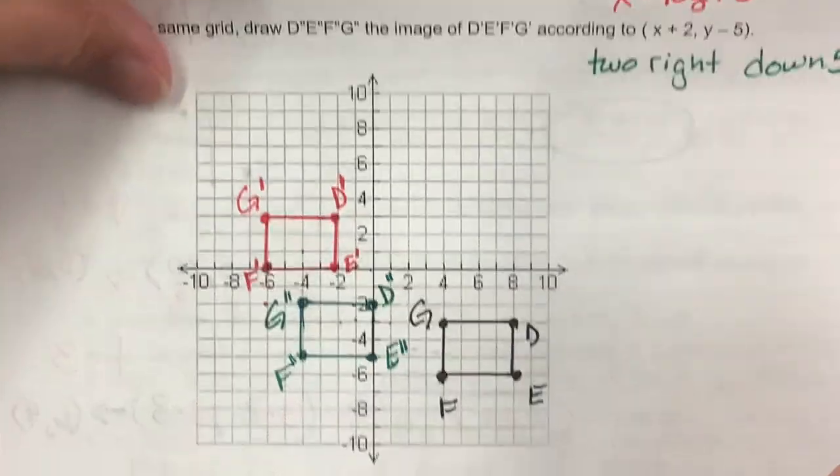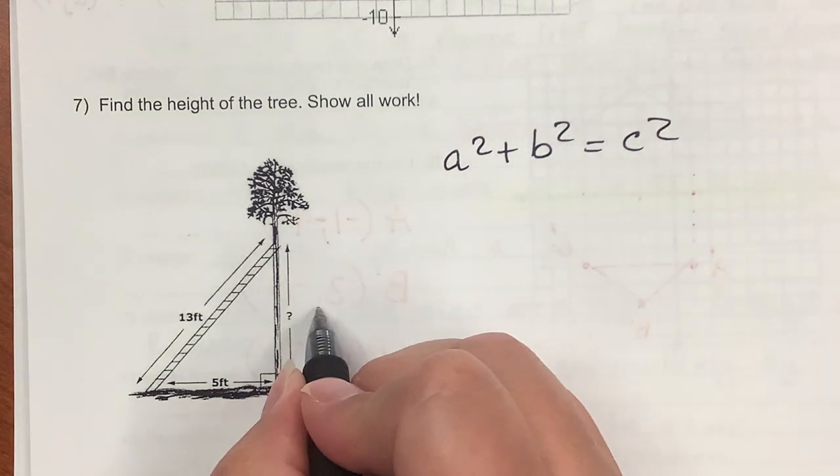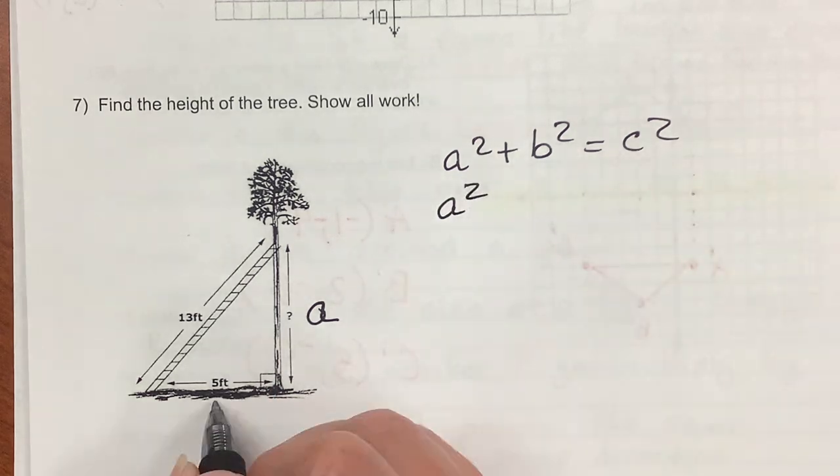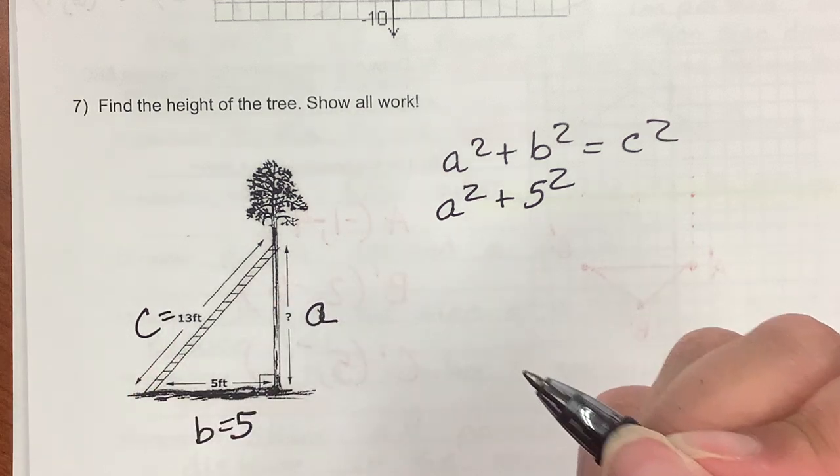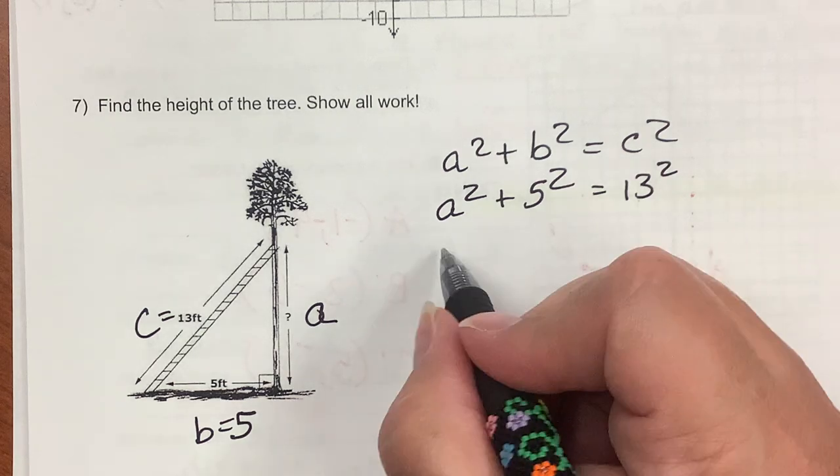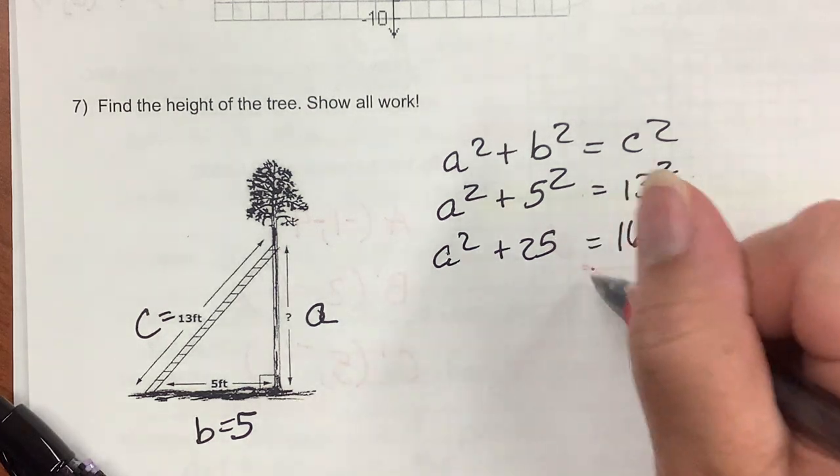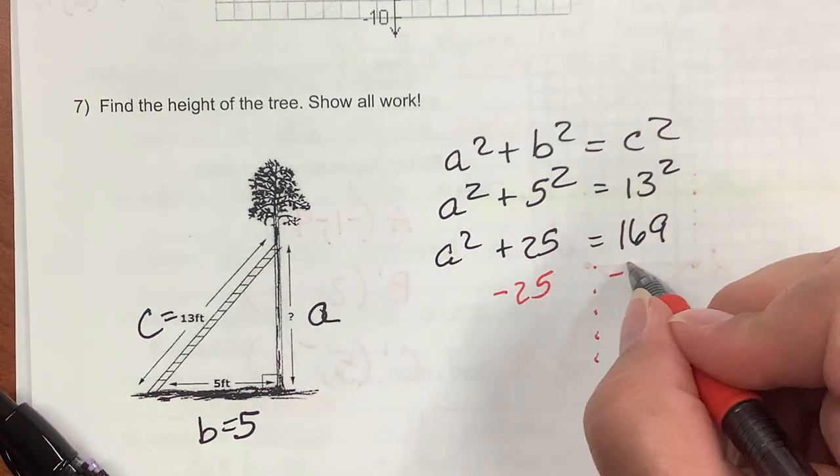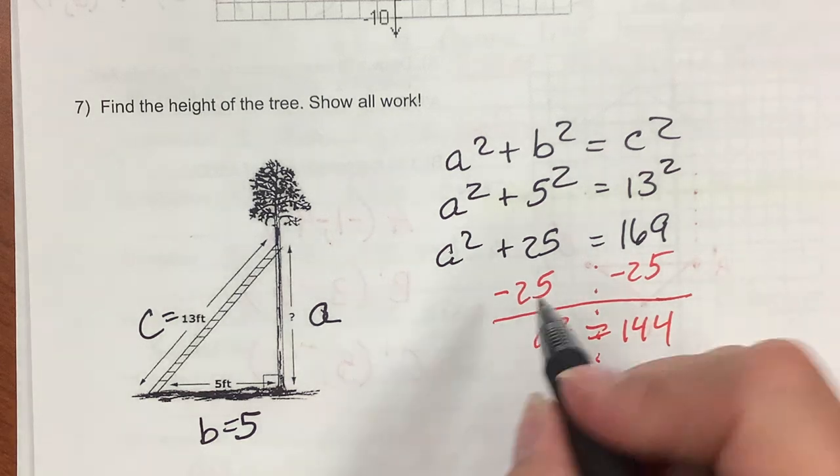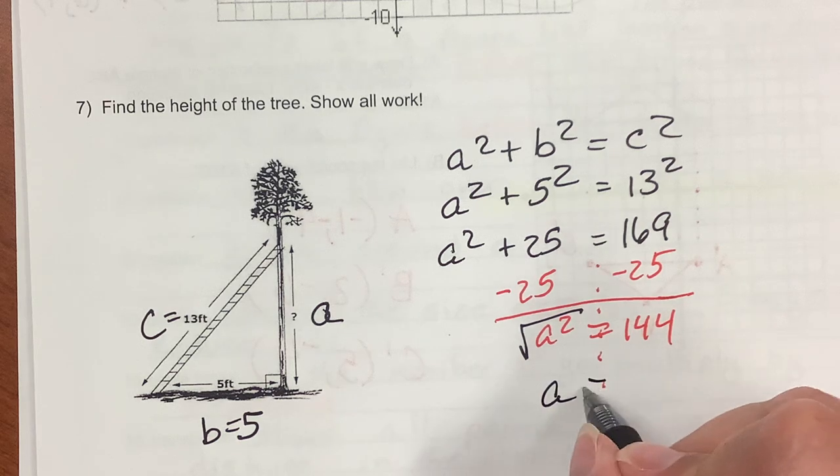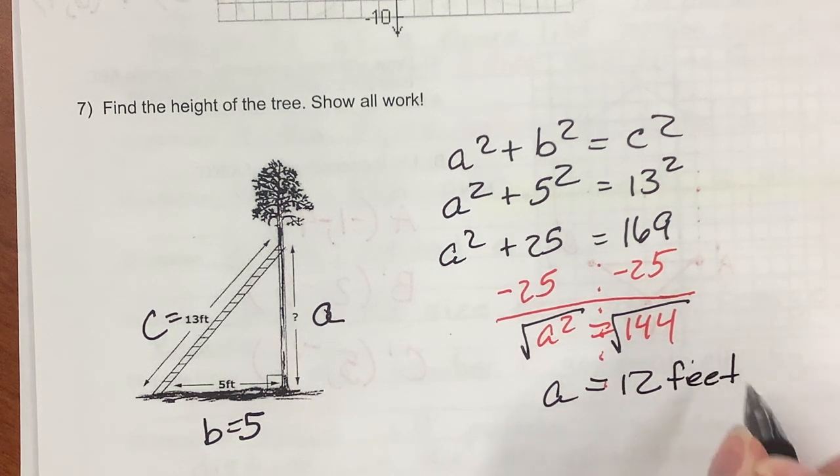The last problem on this page is find the height of the tree. A squared plus B squared equals C squared. A is the altitude, which I don't have, so I'm just going to write A squared. B is the base equals 5, so plus 5 squared. And C is the hypotenuse, so it equals 13 squared. A squared plus 25 equals 169. Minus 25 from both sides, and you get A squared equals 144. The square root of A squared is A, and the square root of 144 is 12. My unit is feet. 12 feet.